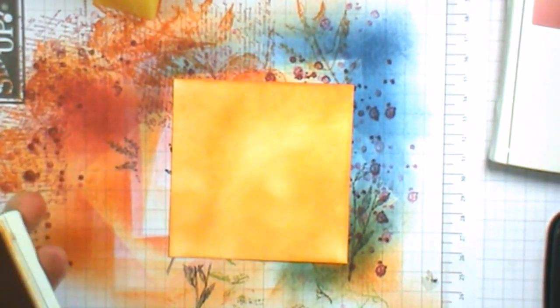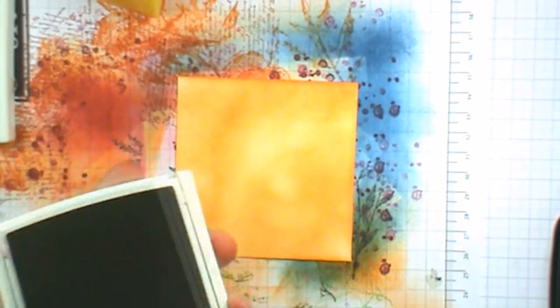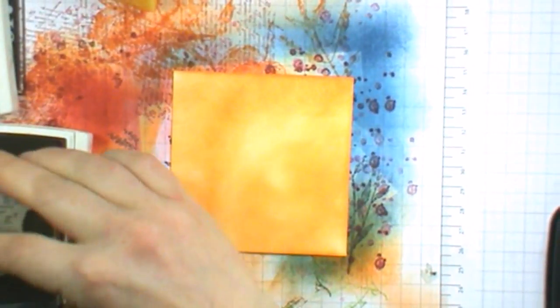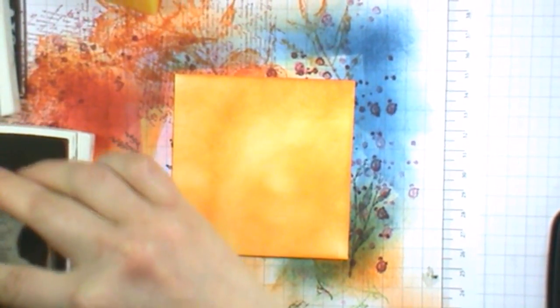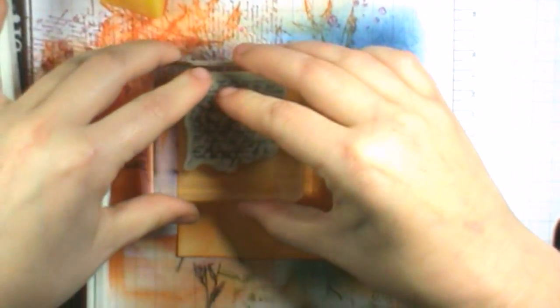We will now take our Cherry Cobbler and our French Foliage script. I don't want this very dark so I'm going to stamp it once on the scratch paper and then put it onto our cardstock, and then once again onto the scratch paper and then onto our cardstock.